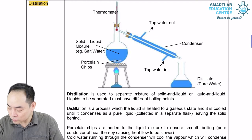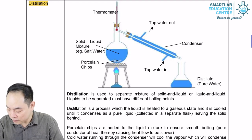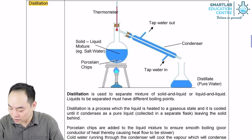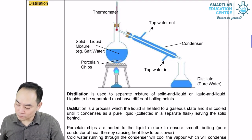This process can also be used to extract natural oils from plants, which can be used to make perfume. The plant material is heated and the oil is distilled as vapour and collected.